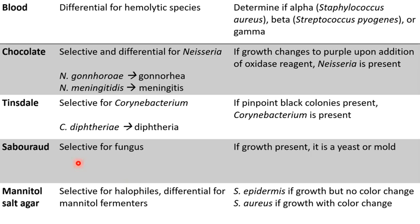Next we have the Tinsdale agar plate, which is selective for members of the genus Corynebacterium. Specifically, Corynebacterium diphtheriae is the causal agent of the throat disease diphtheria, and so this agar is useful as an identifier for this species. When Corynebacterium is present, colonies show up as pinpoint — very, very tiny black colonies on the plate. Other types of bacteria will not grow on the Tinsdale plate.